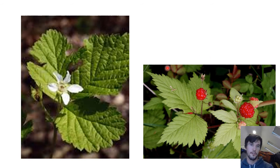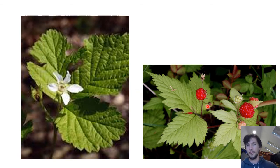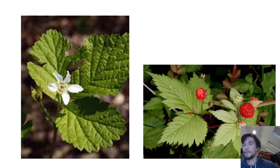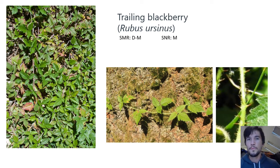For the reproductive structures: whereas the salmonberry flowers were pink, these ones tend to be more white, but it's the same general shape. Those will develop into raspberries — clusters of little globe-shaped fruits that are really bright red, really enjoyable little berries.